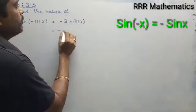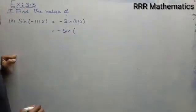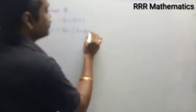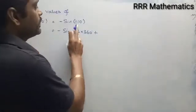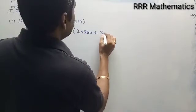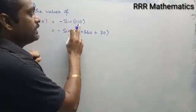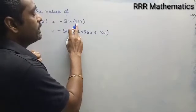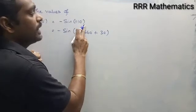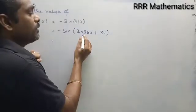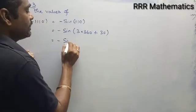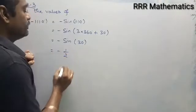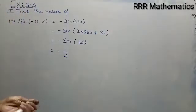Now divide 1110 degree by 360 — it gives 3 times 360, which is 1080 degree, plus 30 degree, giving 1110 degree. The multiple of 360 is always 0, so this simplifies to 30 degree. Sin 30 gives 1 by 2, so the final result in this case is minus 1 by 2.